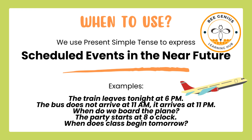Here are some examples of scheduled events in the near future using present simple tense: The train leaves tonight at 6 p.m. The bus does not arrive at 11 a.m. — it arrives at 11 p.m. When do we board the plane? The party starts at 8 o'clock. When does class begin tomorrow?